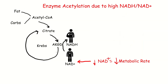The way this acetylation works — this is a simplified model of the Krebs cycle. Fat and carbs are made into acetyl-CoA. They swirl around the Krebs cycle, and as they're doing this, they're converting NAD+ to NADH.